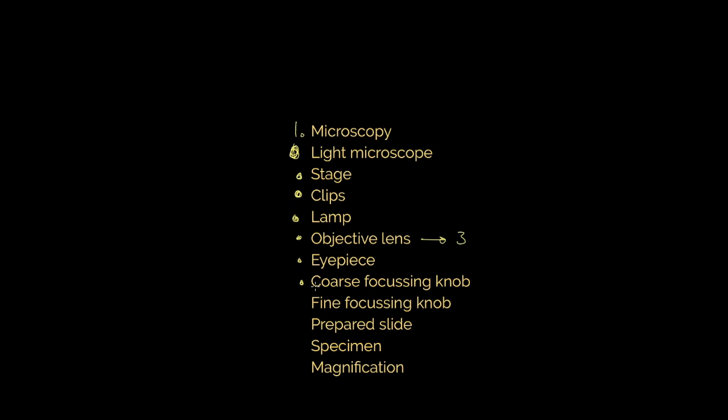The coarse focusing knob, initially we use that to bring the stage up to the objective lens, and then we adjust it downwards until we get a clear picture. The fine focusing knob allows us to get the best image possible by adjustment. The prepared slide is where our specimen will sit. And finally, the magnification, which we know is the magnification of the objective lens, multiplied by the magnification of our eyepiece lens. Some great terminology for you to use.